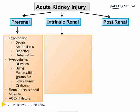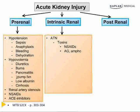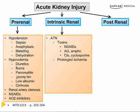Under intrinsic renal causes of AKI, the most common is acute tubular necrosis, or ATN. Causes of ATN are typically from toxins or ischemia. Toxins most commonly leading to ATN include NSAIDs, aminoglycosides, and amphotericin — nicknamed amphoterrible because it so often causes intrinsic ATN. Cisplatin and cyclosporine can also cause ATN, and prolonged ischemia, or stopping blood flow to the kidney, can eventually lead to acute tubular necrosis as well.